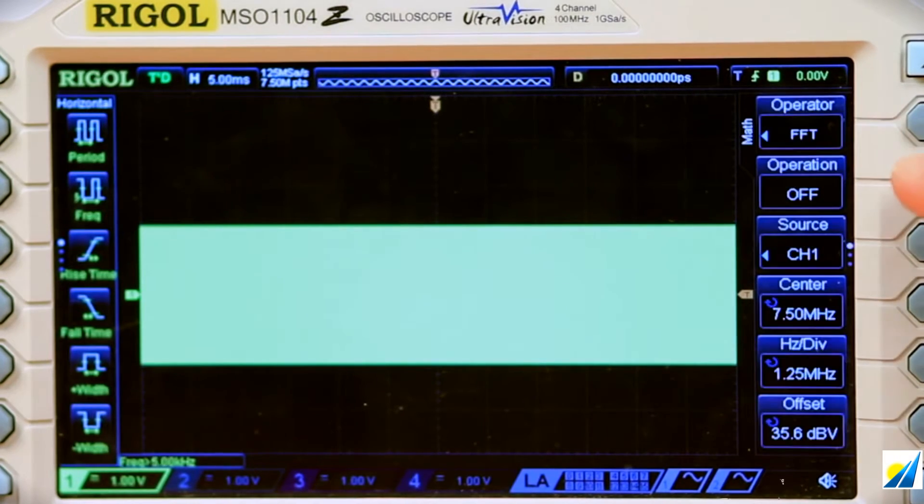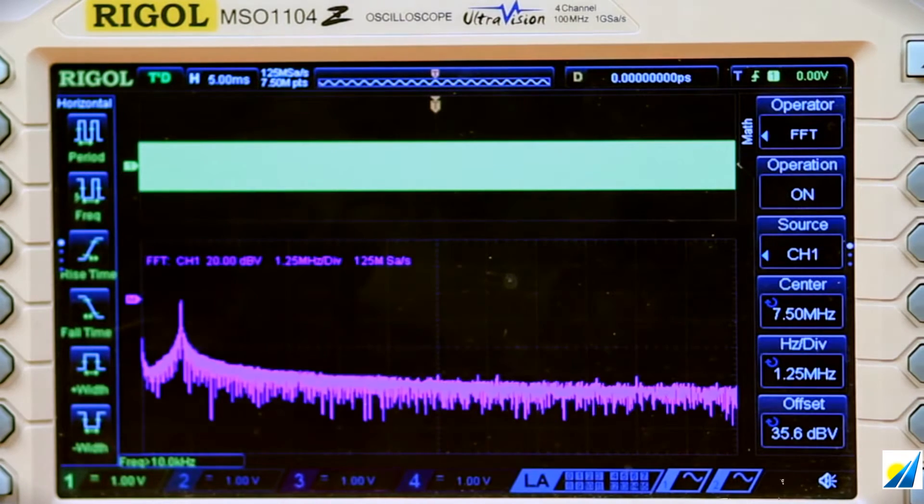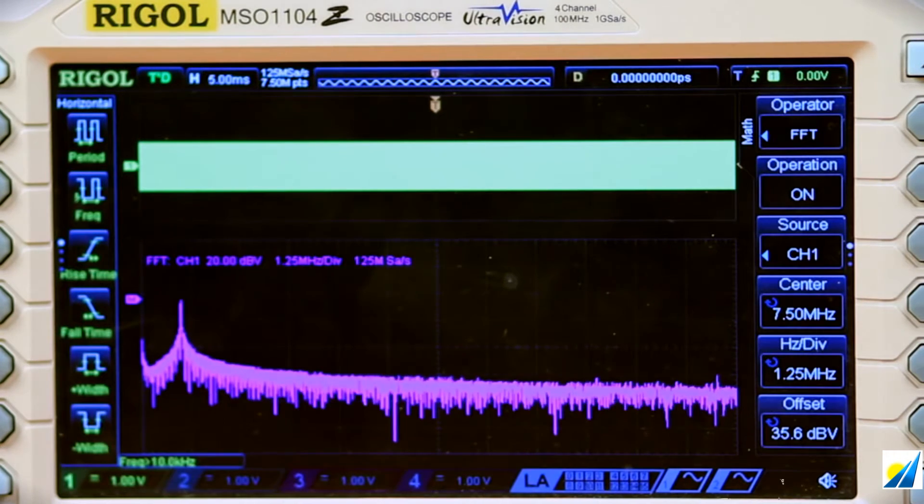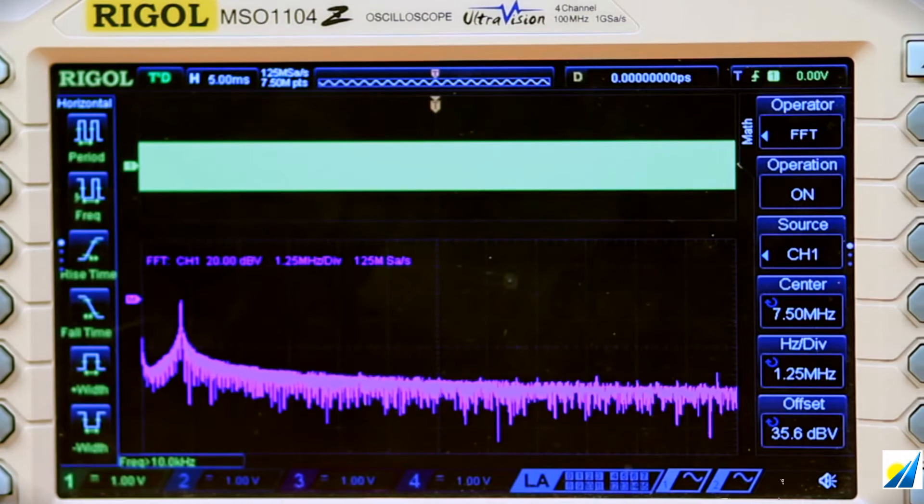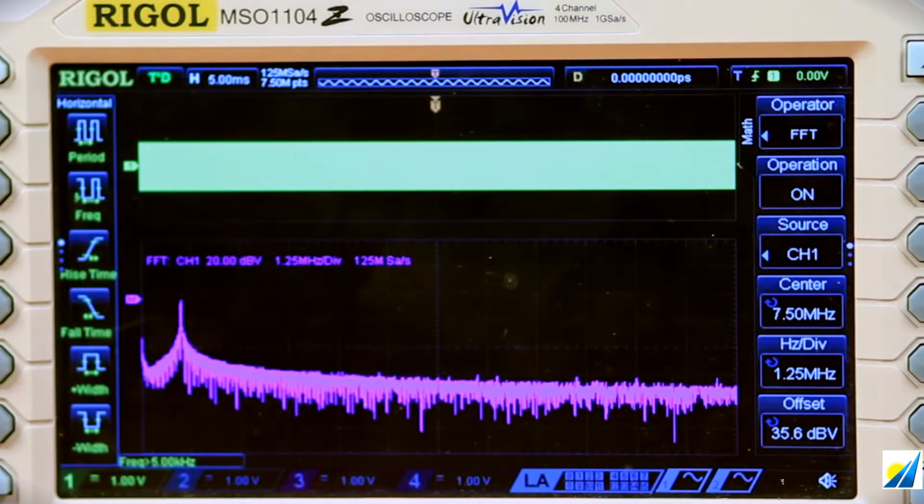Now let's go ahead and turn the FFT on. Here we see the FFT on the bottom of the screen in purple. As you can see, we have really one peak at this point, and that's at one megahertz.